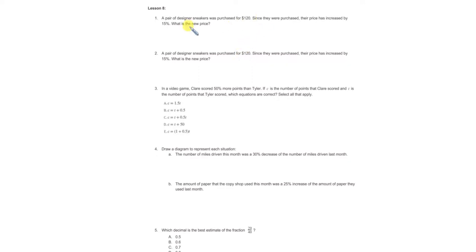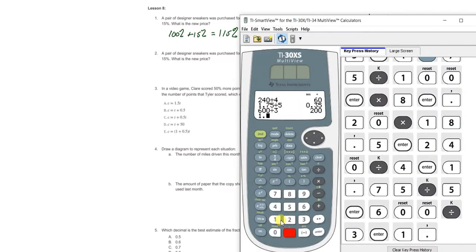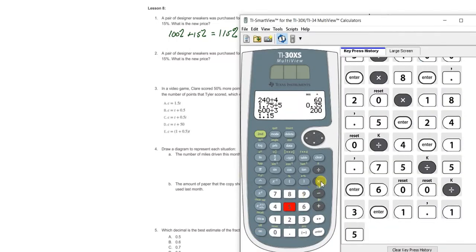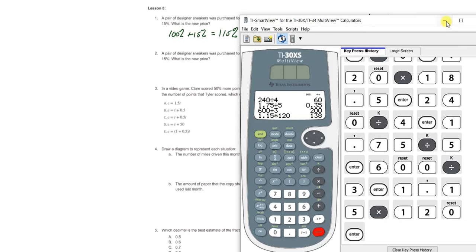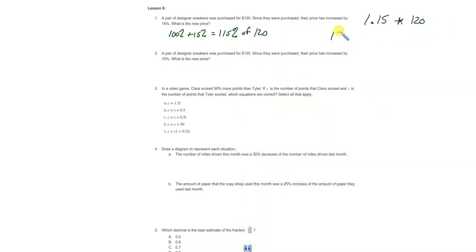Here is what I would simply do. I know that a 15% increase is like taking 100% and adding 15% onto it. So I want to find 115% of $120. So all I would multiply in my calculator would be 1.15 multiplied by 120. So that's what I'm going to do, 1.15 for my 115% times the old price of the sneakers. This should bump it up to the new price. $138 is what they're selling them for now.